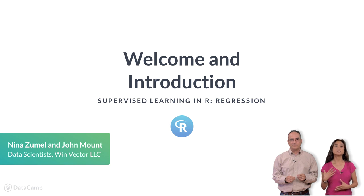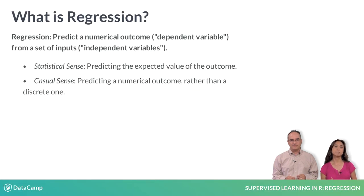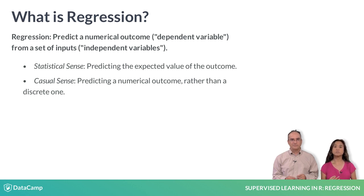Regression is the task of predicting a numerical outcome based on the values of a set of inputs or independent variables. In the statistical sense, regression is predicting the expected value of an outcome. But in the casual sense, and for the purposes of this course, we'll define regression as predicting numerical values. This distinguishes regression from classification, which is the task of making discrete predictions.